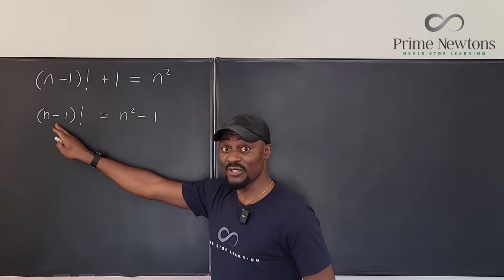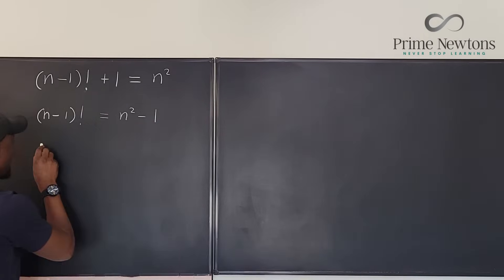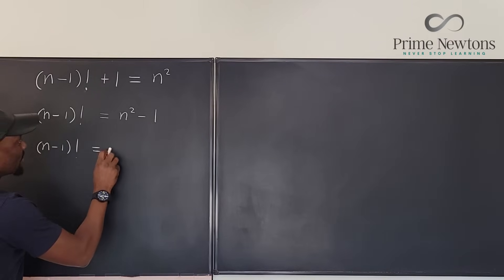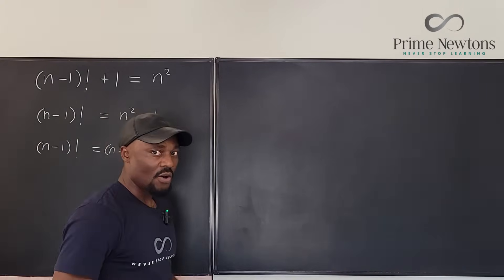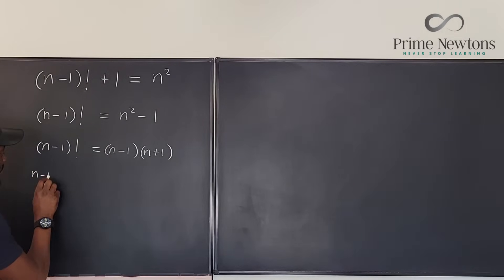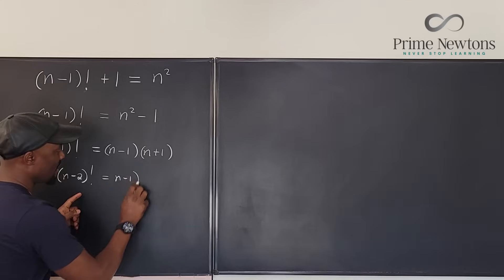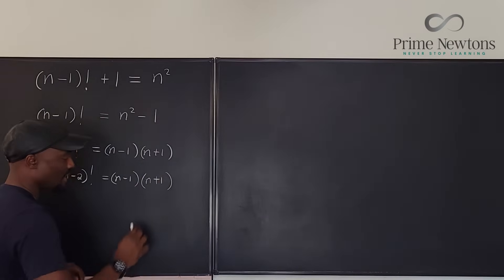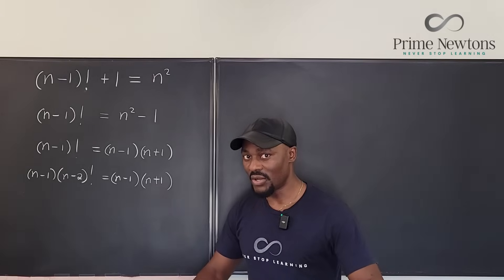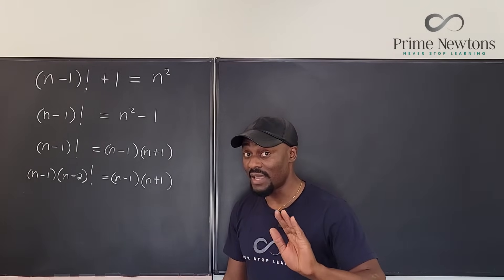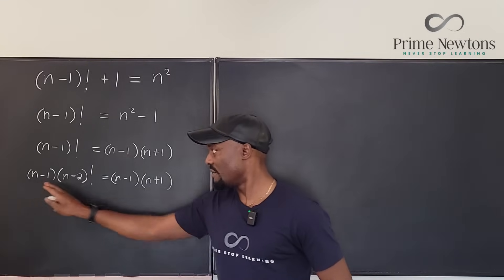That means I can write n²-1 as a difference of two squares, giving (n-1)(n+1). So I have (n-1) factorial equals (n-1)(n+1). Now I expand the factorial one more step: (n-1) factorial is (n-1) times (n-2) factorial, which equals (n-1)(n+1). I can divide both sides by (n-1) as long as n-1 ≠ 0, that is n ≠ 1.